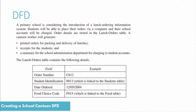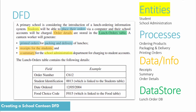The first thing we need to do is break down this question and find out the entities, the processes, the databases or data stores, as well as the data and information. The entities are highlighted in yellow. Entities are things that either give or receive data in this scenario. So the students will have to place their order, which makes them an entity, and the school administration will require a summary, so they become an entity as well.